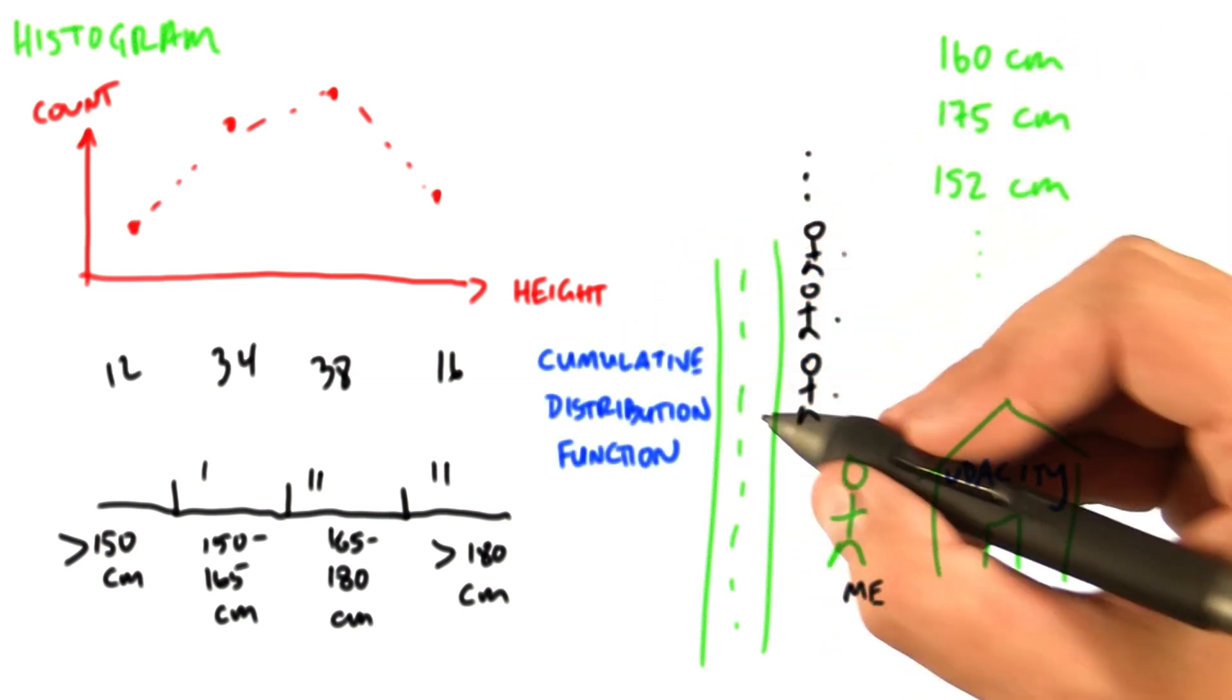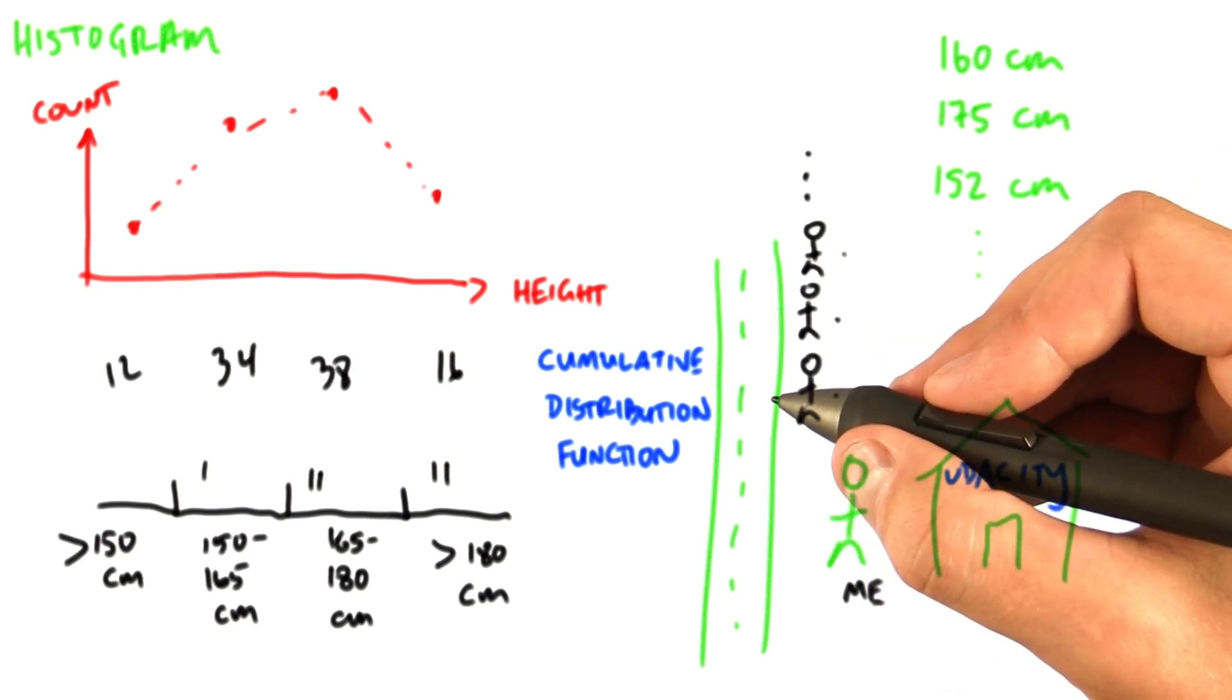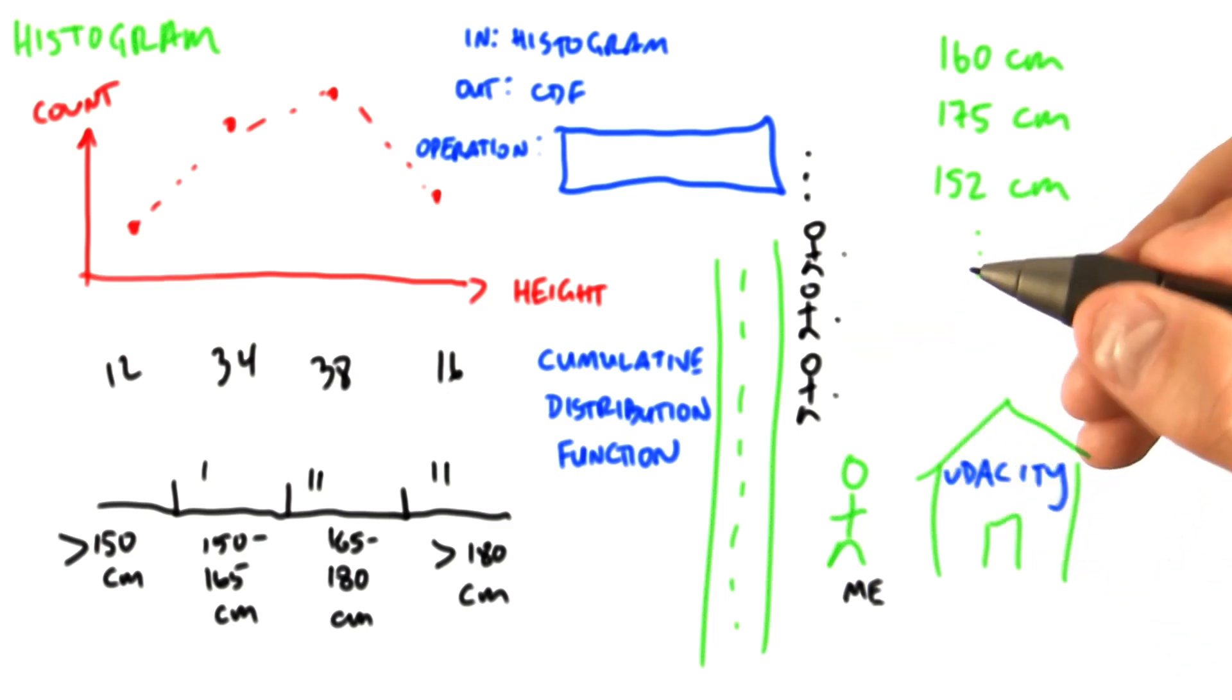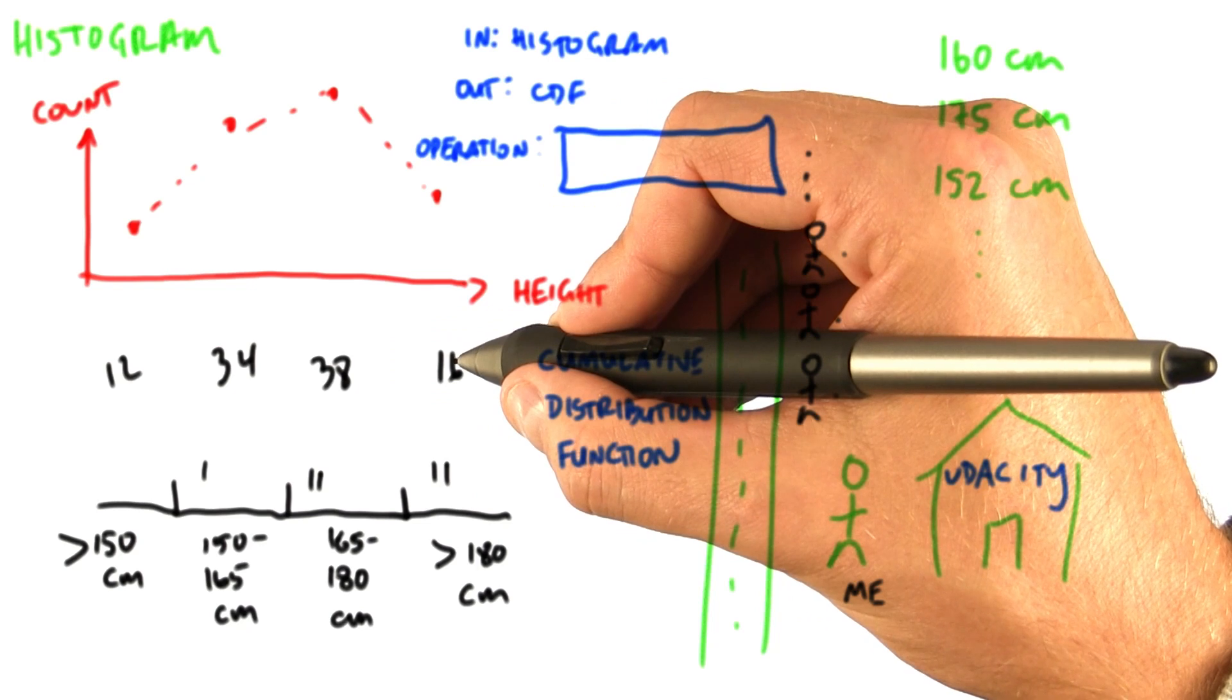This computation is called the cumulative distribution function on a histogram. It's also known as a definite integral. We want to compute the cumulative distribution function on this histogram. The input of the histogram is an array of values. For instance, 12, 34, 38, 16.